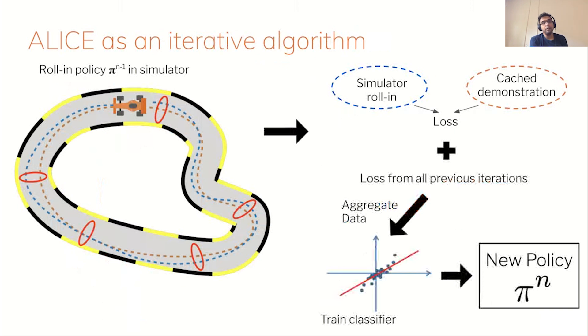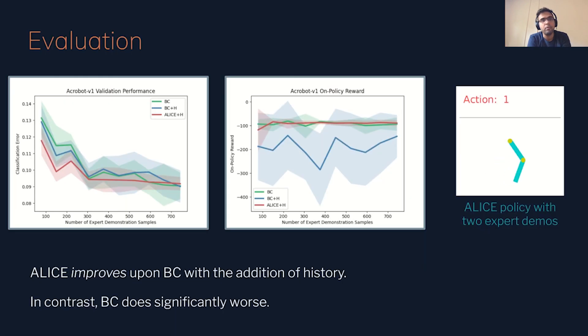We evaluated ALICE on the Acrobat problem that Arun showed previously. When history is added as a feature, both behavior cloning and ALICE are able to drive down the validation error, which is shown in the plot on the left. But ALICE actually does well in execution time, unlike behavior cloning, as shown in the plot in the middle. In fact, ALICE does better than behavior cloning without the added history feature, which means it's able to use history to its advantage. And this is really the key takeaway. History can be a powerful feature if used while properly adjusting for covariate shift.